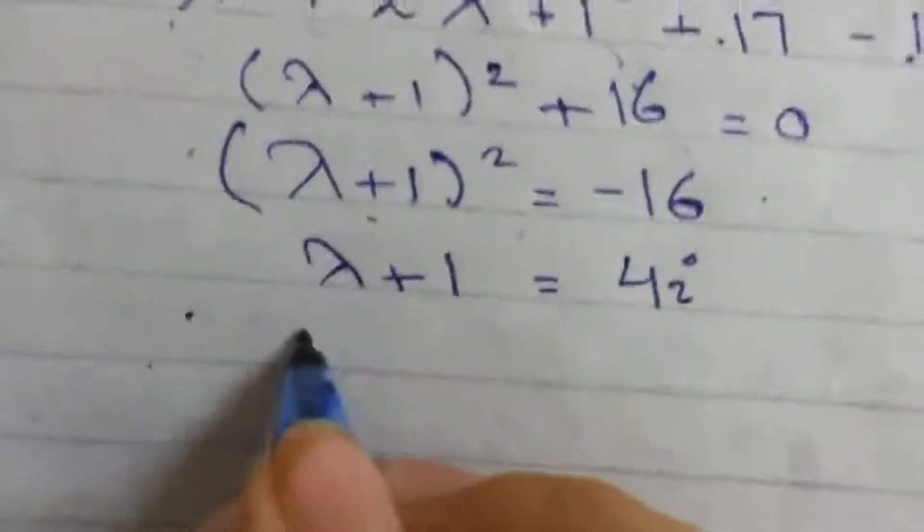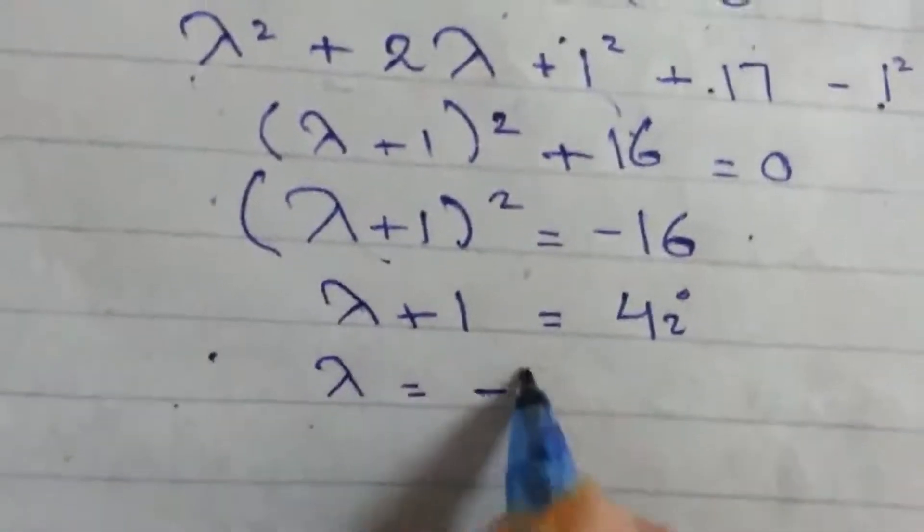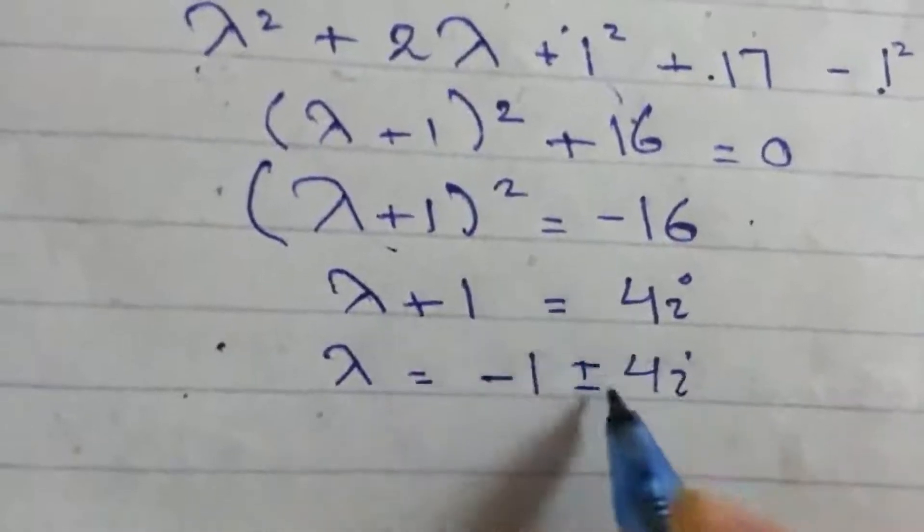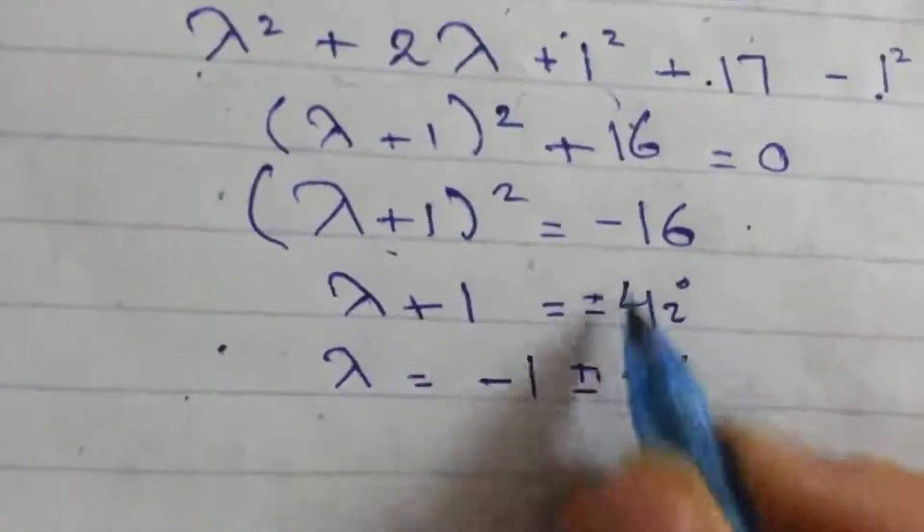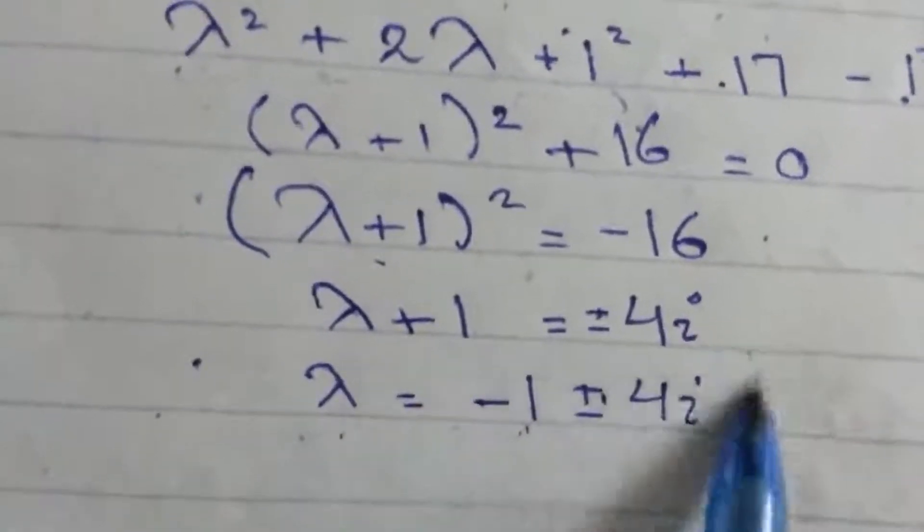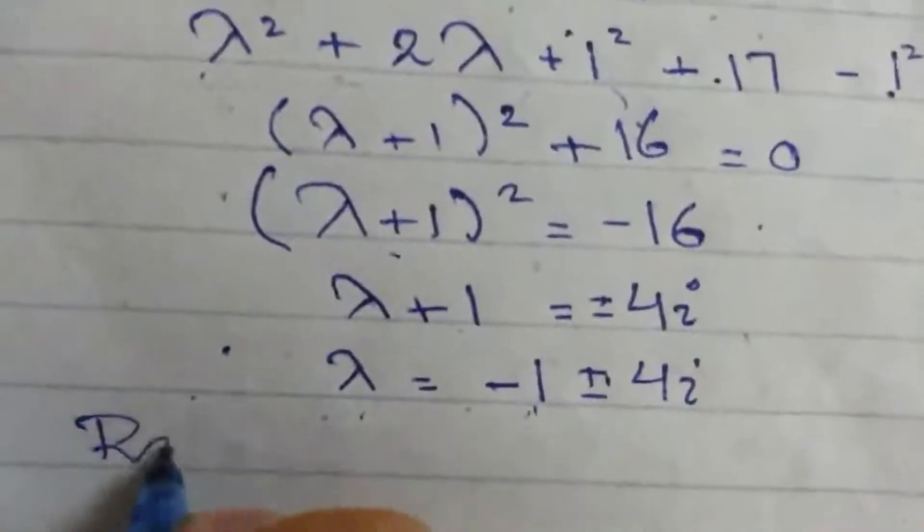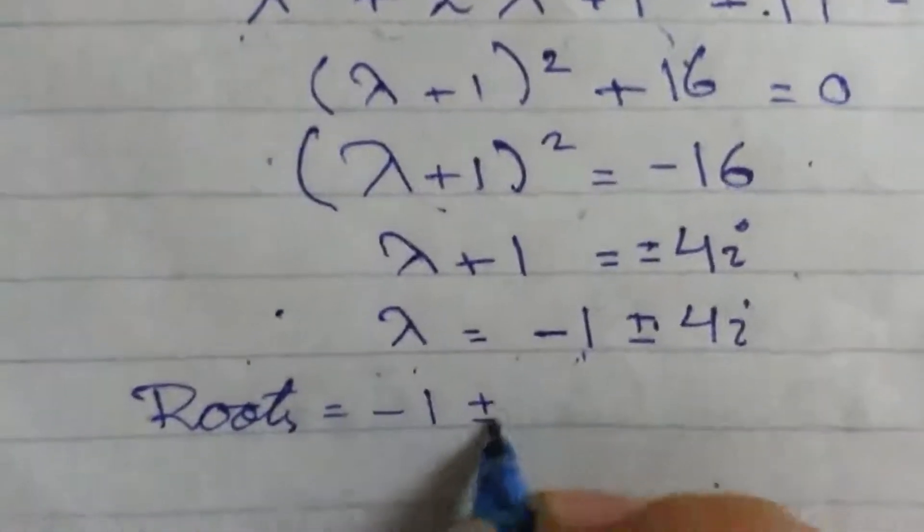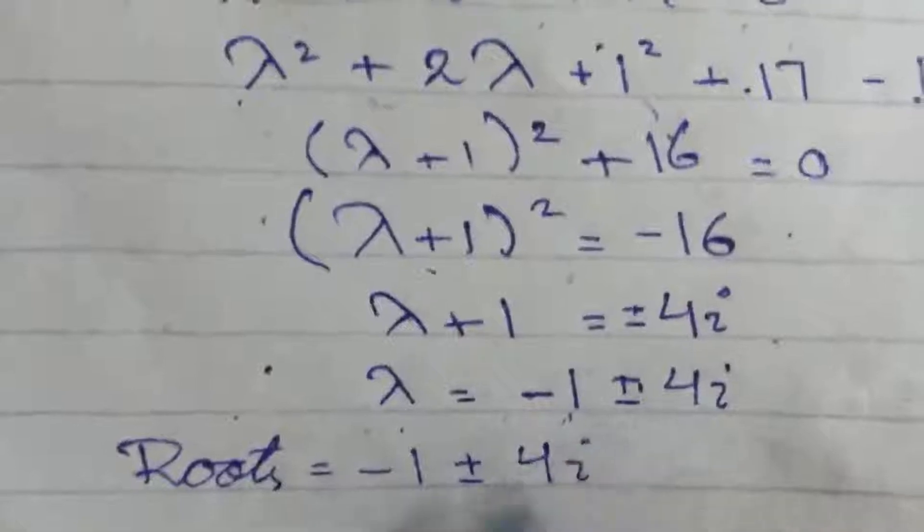Now when we will shift 1 over there, it will be minus 1 plus minus 4 iota. The plus minus will be over here after the square root. Now this is basically the roots: minus 1 ± 4i. This is basically the root of this equation.